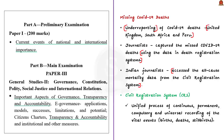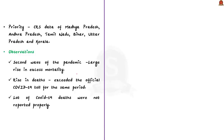The Civil Registration System, or CRS, in India is the unified process of continuous, permanent, compulsory and universal recording of vital events including birth, death, and stillbirth along with their characteristics. The data generated through a complete and up-to-date CRS is essential for socio-economic planning. Journalists accessed the CRS data of states like Madhya Pradesh, Andhra Pradesh, Tamil Nadu, Bihar, Uttar Pradesh, and Kerala. By accessing the all-cause mortality data of the CRS, they concluded that during the second wave, between April and May 2021, there was a large rise in excess mortality that easily exceeded the official COVID-19 toll for the same period.